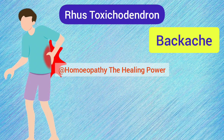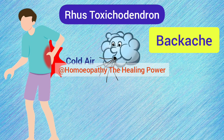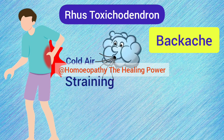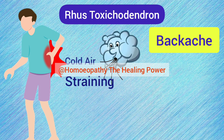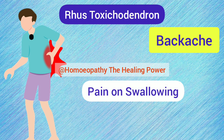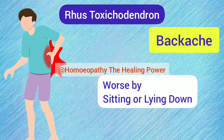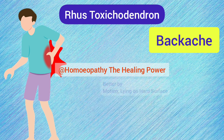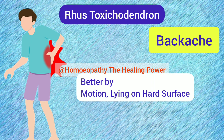Backache is another important condition for Rhus Tox. It is caused by cold air exposure or straining and is especially seen between the shoulders with great pain and stiffness. A very typical symptom is pain on swallowing. Backache gets aggravated by sitting or lying down, and gets ameliorated by motion or lying on something hard.